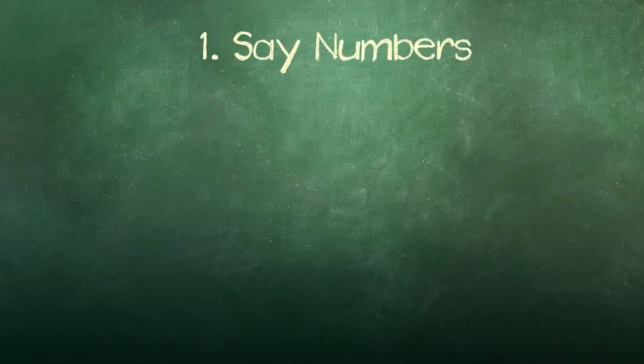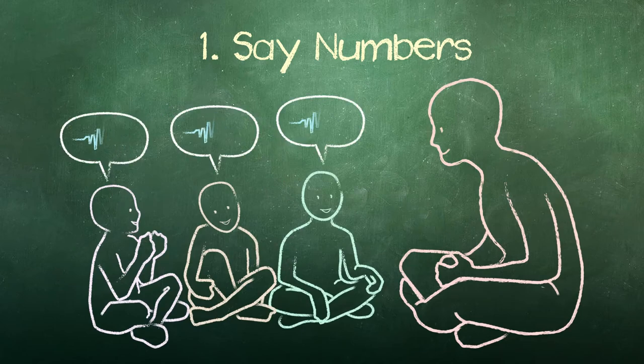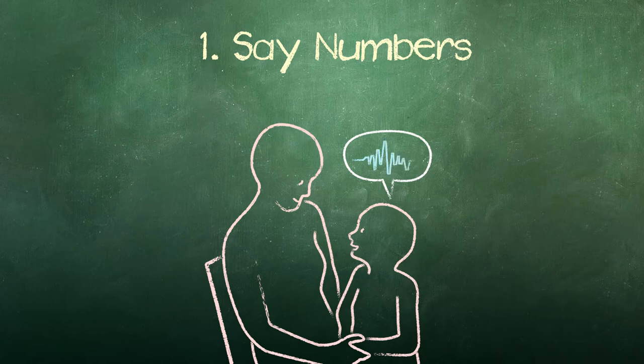First is learning to say numbers in order. One, two, three, four, five. One, two, three, four, five. One, two, three, four, five.